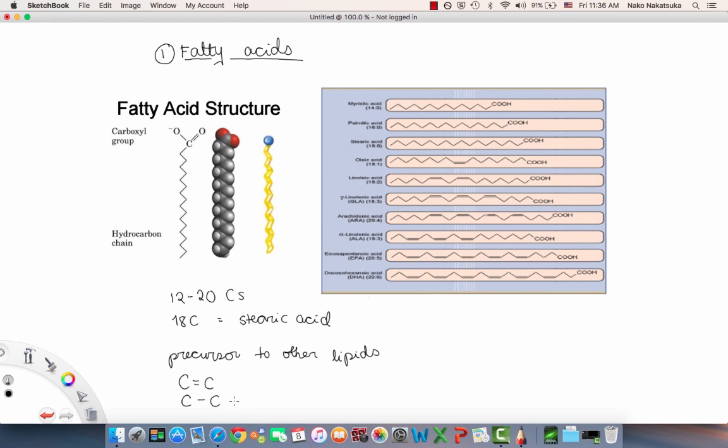So remember we talked about this in the review of organic chemistry. If it has a double bond it's called unsaturated and if it does not have a double bond it's called saturated. Here are some examples of different fatty acid structures. In this case we have 14 carbons, 16 for palmitic acid, 18 for stearic acid and as you can see they're all increasing with two carbons.